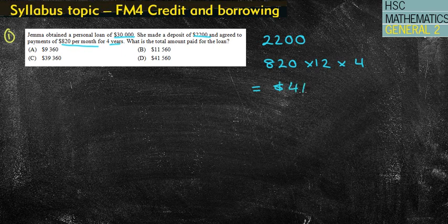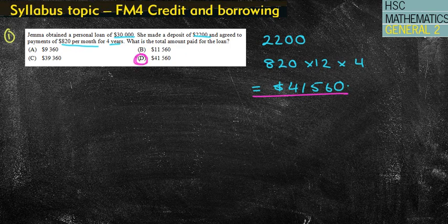And that will give me a total amount of $41,560. And just going to make sure what the question asked: what is the total amount paid for the loan? Yep, that's the total amount, so I've got the answer of D.